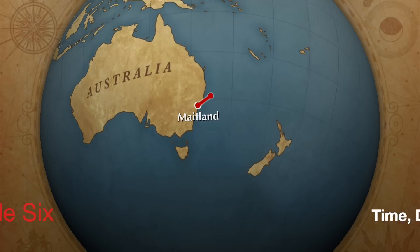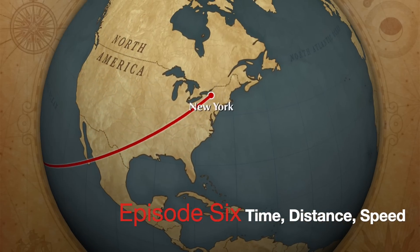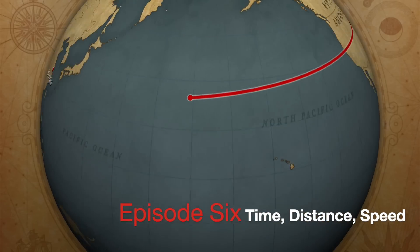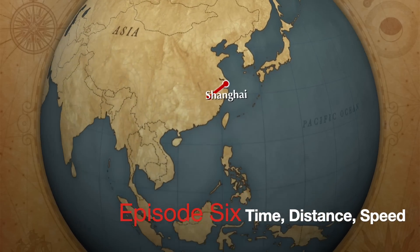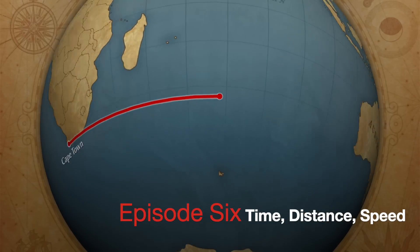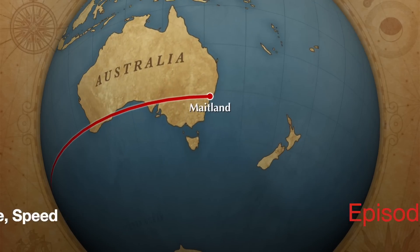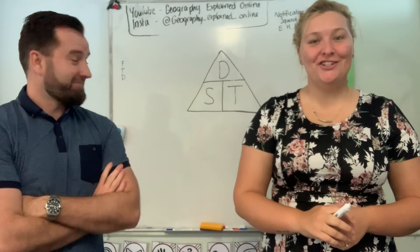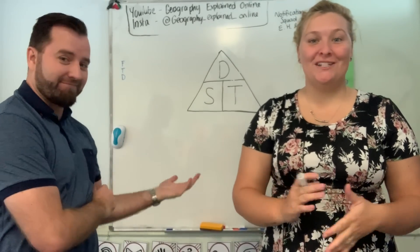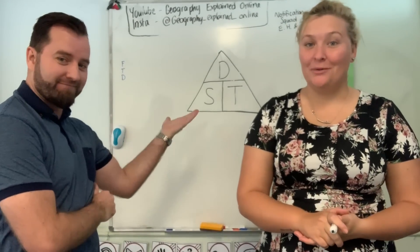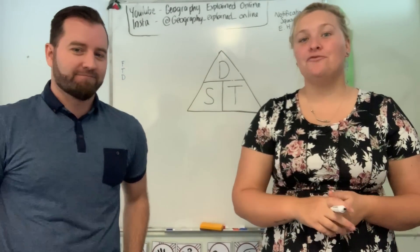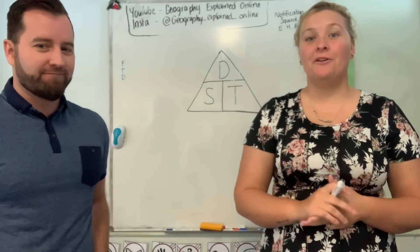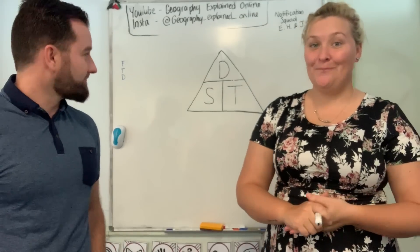Just a few easy steps, which we're going to take you through now. So we're here at the whiteboard and we're going to show you a simple little trick to work out all of our equations. Time, distance and speed is really just three different equations you need to know.